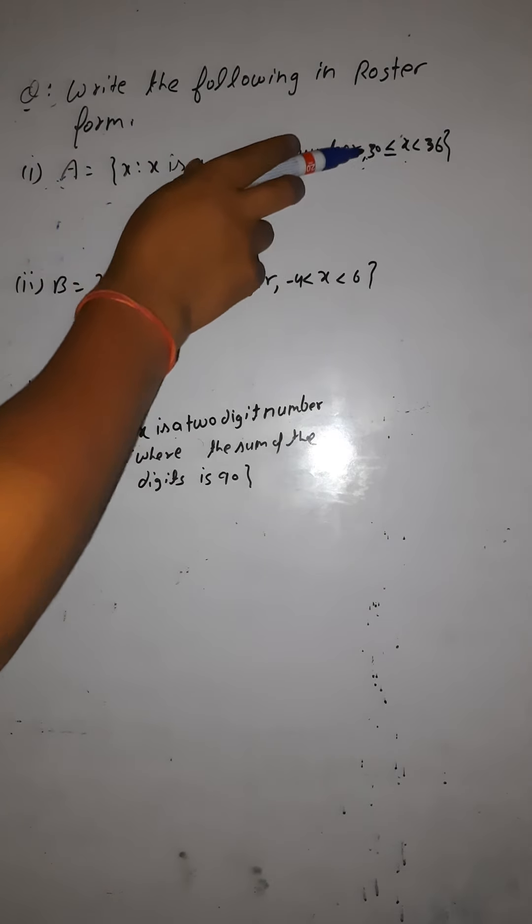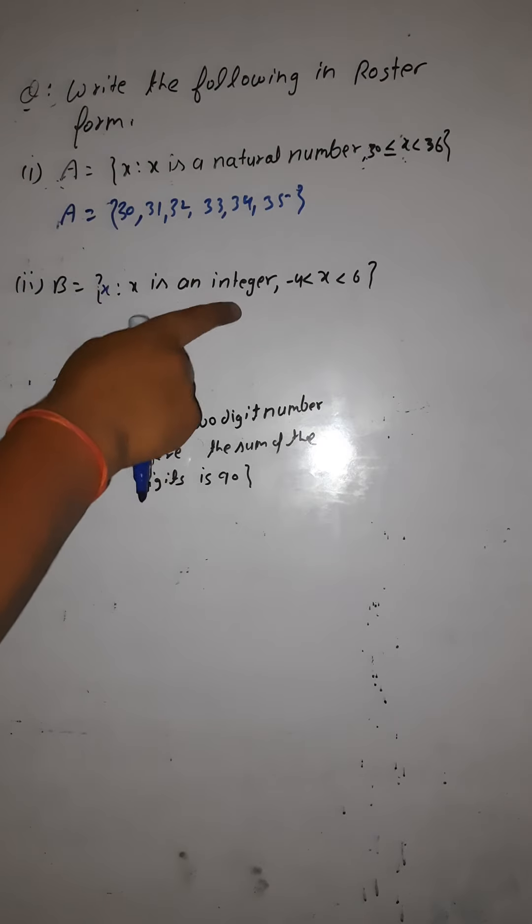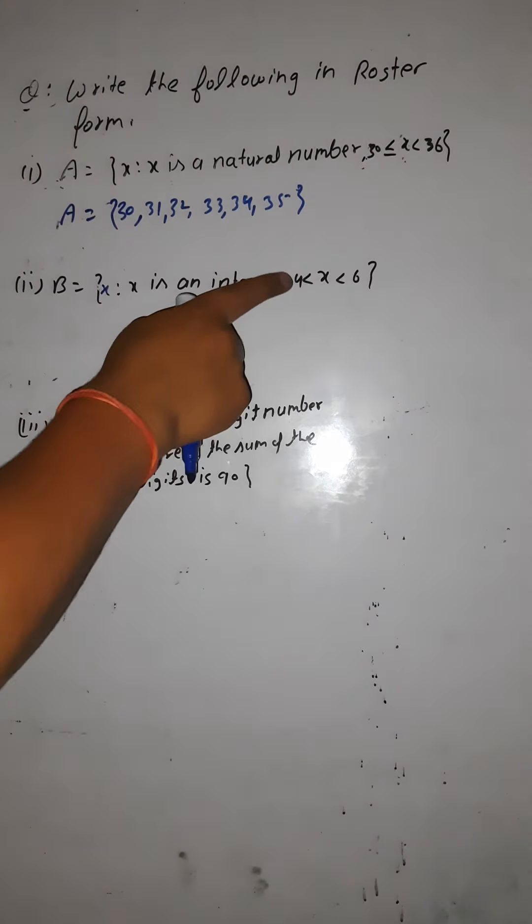Question two: set B contains the element X such that X is an integer and X is greater than minus 4 and less than 6. The elements greater than minus 4 are: minus 3, minus 2, minus 1, 0, 1, 2, 3, 4, 5. We do not write 6 because X must be less than 6. These are the elements under set B.